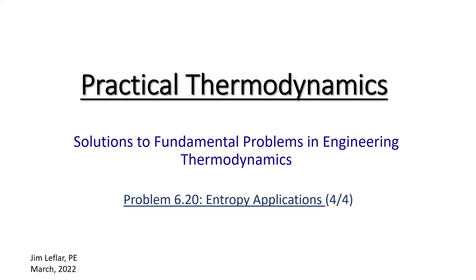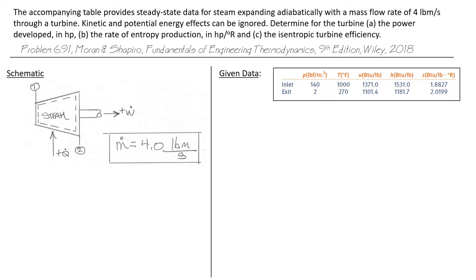Let's do another thermodynamic problem involving entropy, this one involving an isentropic turbine. The accompanying table provides steady-state data for steam expanding adiabatically with a mass flow rate of 4 pounds mass per second through a turbine. Kinetic and potential energy effects can be ignored. Determine for the turbine: A, the power developed in horsepower; B, the rate of entropy production in horsepower per degree R; and C, the isentropic turbine efficiency.